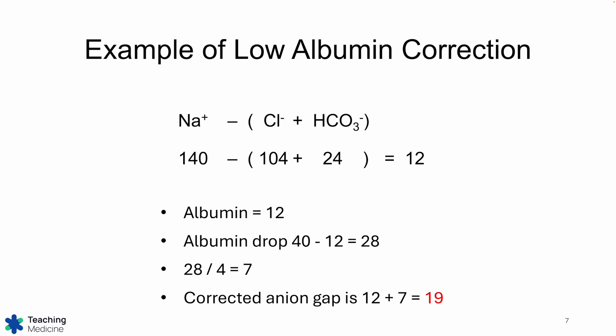Now we have a corrected anion gap of 19, and you can see 12 would be normal. If you didn't correct for the albumin, you would assume the anion gap is normal. But after correcting, you see that it is indeed elevated. That's as much as you need to do. It's a little bit of extra math — inconvenient and time consuming — but you have to do it because you will underestimate the anion gap if you do not correct for albumin.